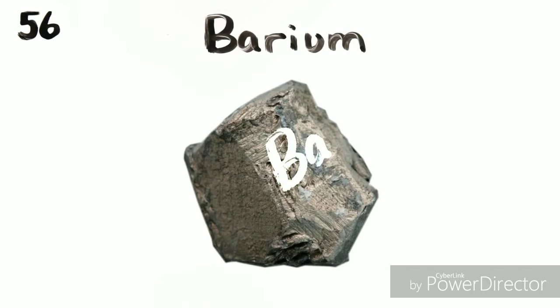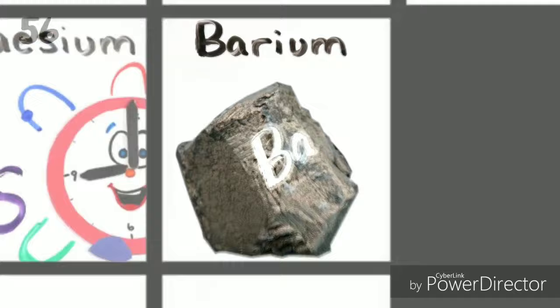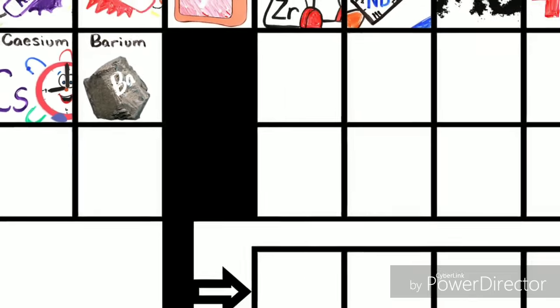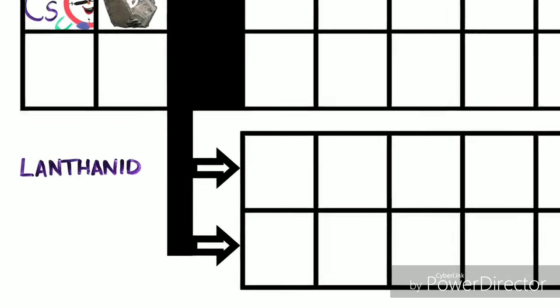Barium is 56, and this is where the table splits, where Lanthanides have just begun.